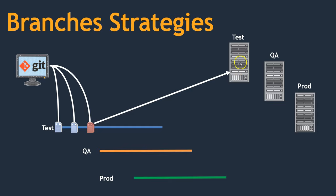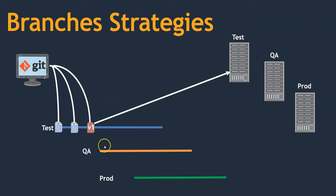The features I intended to enable are working fine in the application running on the test system. I will name this version 1, because this is working code and I can use it on the QA and production systems. But to deploy it on the QA system or the production system, the code should be available in those respective branches.